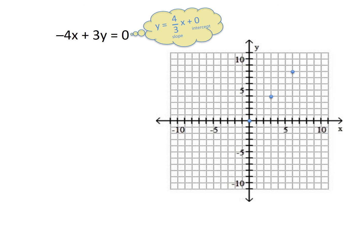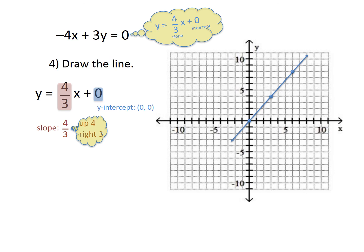The last thing you want to do is draw a line through those points. We drew -4x + 3y = 0, or in slope-intercept form, y = 4/3x + 0, where the y-intercept is (0, 0), which is why we have a point at the origin, and the slope is up 4, right 3.